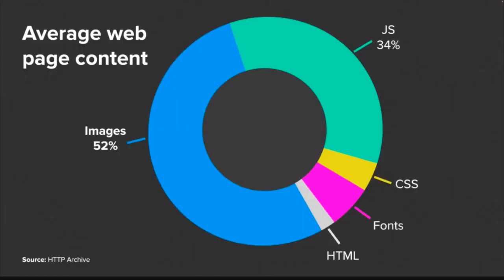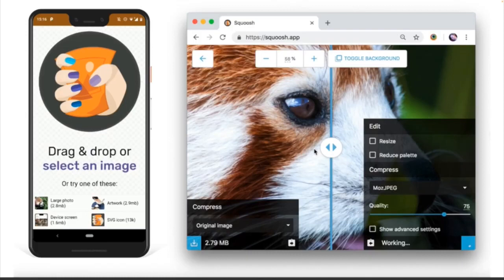There are some quick wins. Optimizing images is one — images make up a large portion of many web pages. According to HTTP Archive, 52% of the weight of an average web page is made up of images. Reducing image size will have a significant impact on technical speed. Some of my former colleagues and I at Google created an app called Squoosh, which is a progressive web app. Let me do a quick demo.